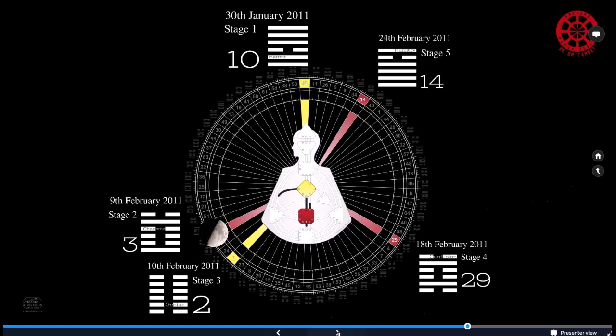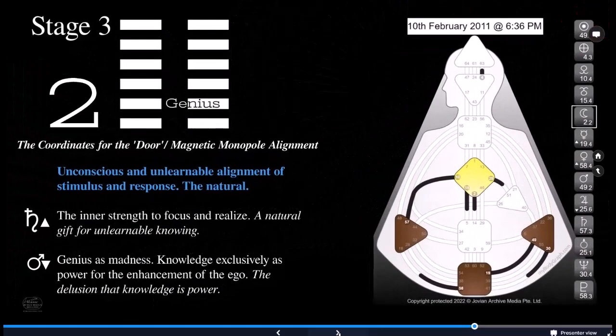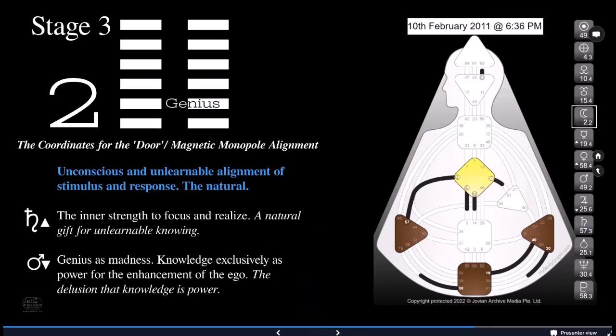So then we go from stage two to stage three in gate two. We move to the driver. This is the magnetic monopole and the second gate. And 10th of February, 2011, genius. This happened at 6:36 PM for Ra. It's the responsibility of this magnetic monopole to bring us in at the right place in the right time. That's its function. Yeah. It's the arm of the streetcar. So here in stage three, what the two is doing, that ice moon is doing in the two, I should say, it's the coordinates for the door. It's our magnetic monopole alignment, what the two is. So here we have unconscious and unlearnable alignment of stimulus and response, the natural. Saturn exalts the inner strength to focus and realize. A natural gift for unlearnable knowing.